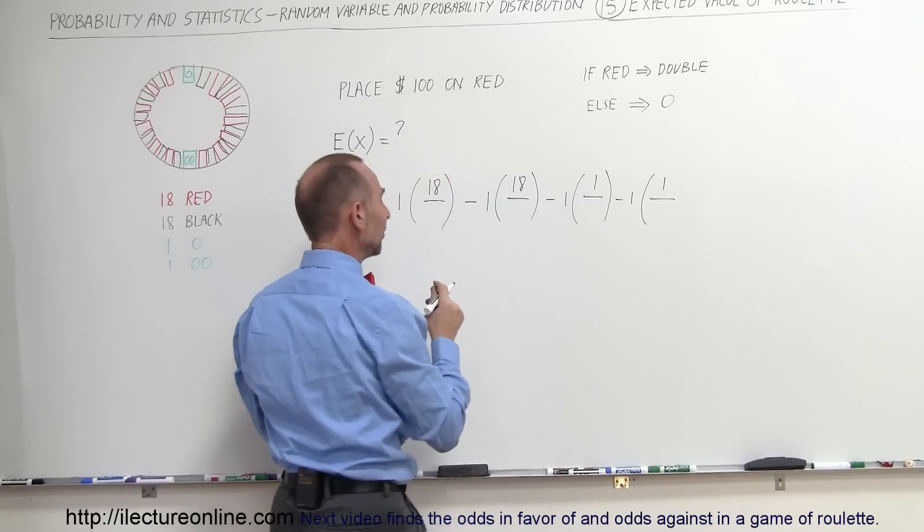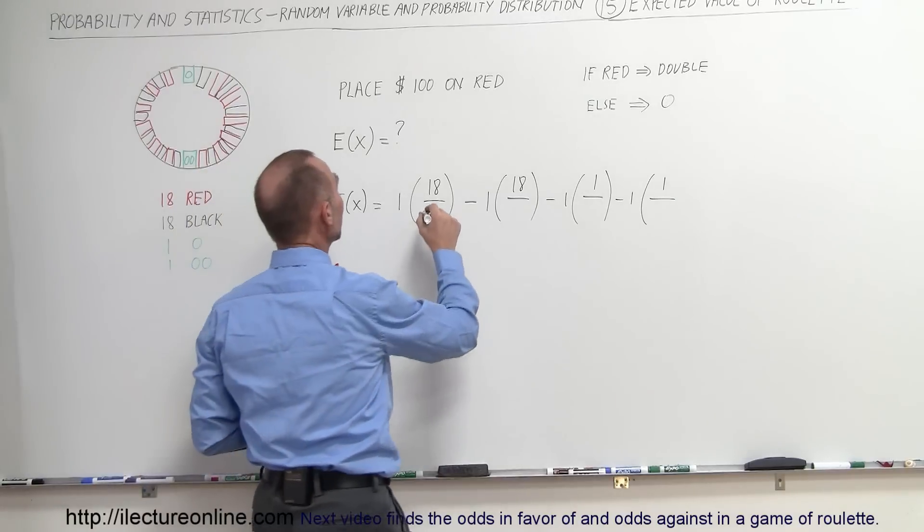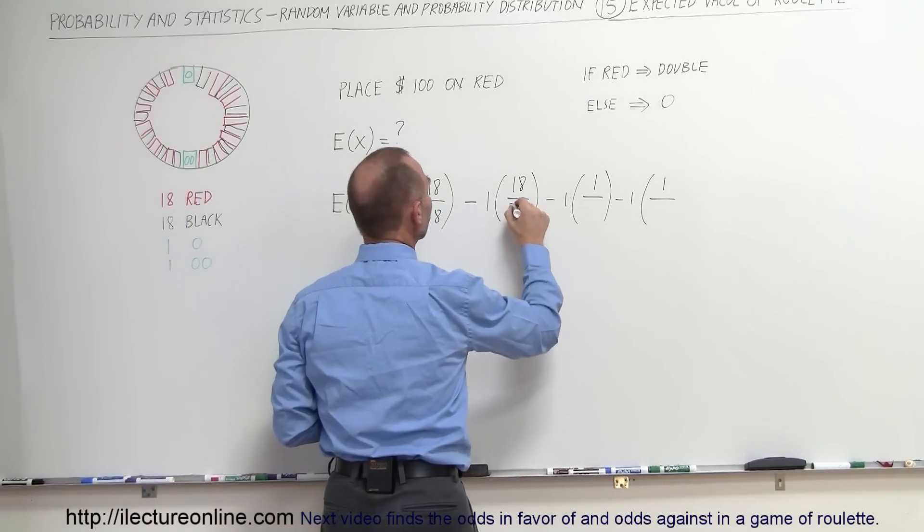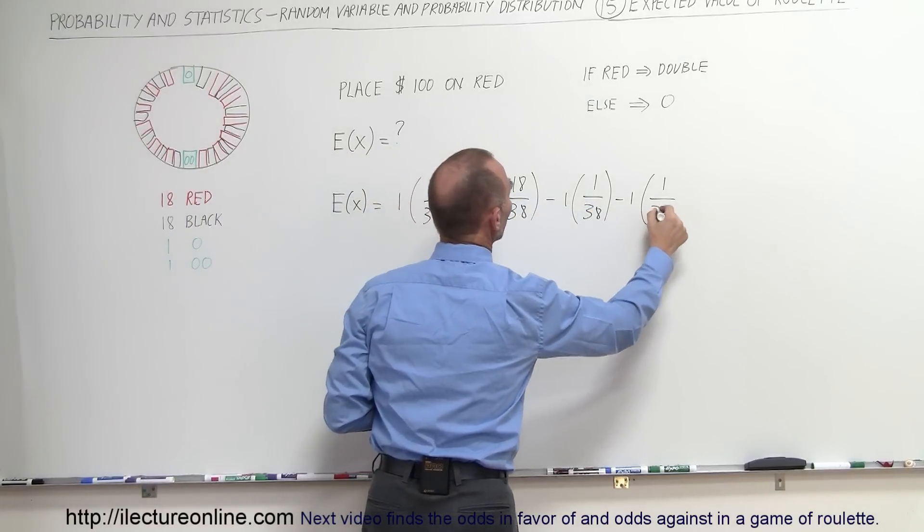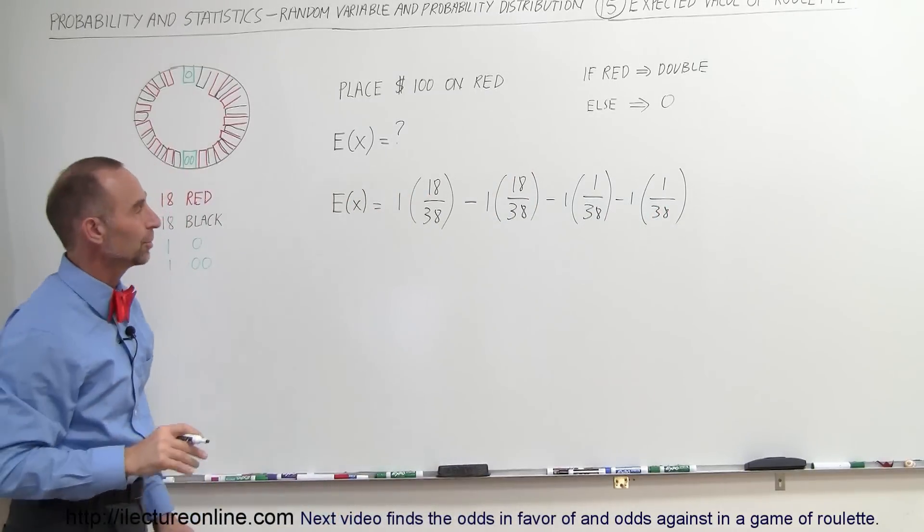I forgot about the two green ones. So there's a total of 18 red, 18 black that's 36 plus the two green that would be a total of 38. So this is 18 out of 38, 1 out of 38 and 1 out of 38. So that would be the expected value per dollar that you put down.